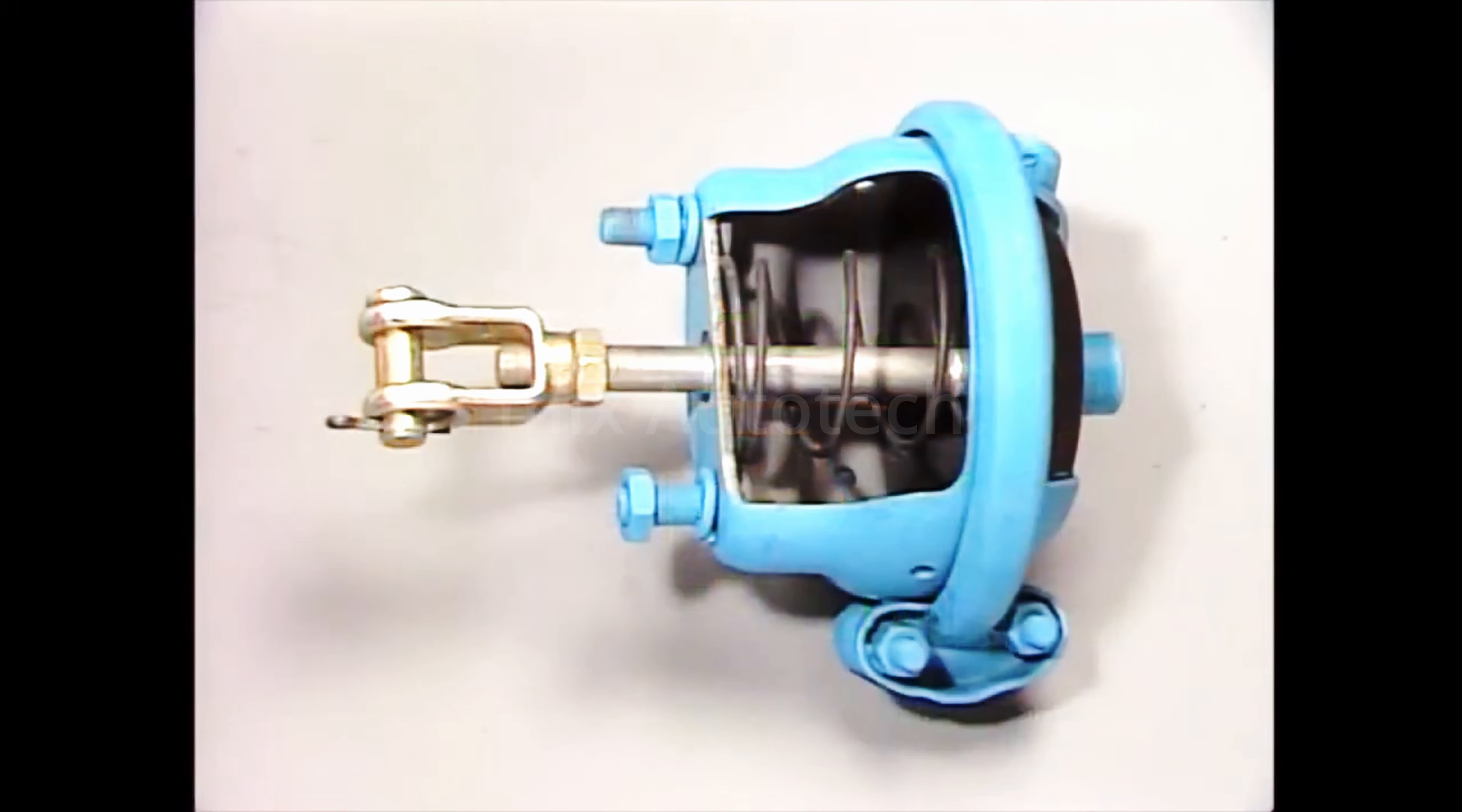This is the front axle brake chamber. In principle, it functions like a piston in a cylinder.